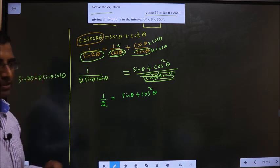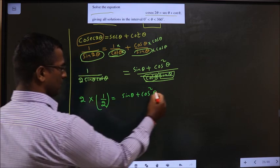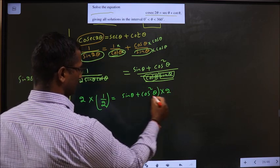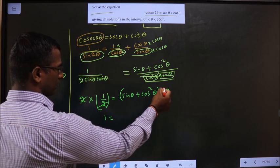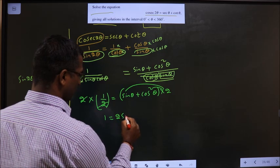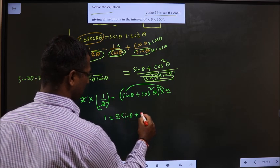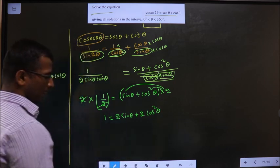To remove 2, multiply both sides with 2. So this cancels out. Here it is 1 equal to multiply 2 to each. So it is 2 sin θ plus 2 cos square θ.